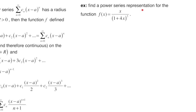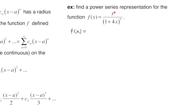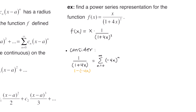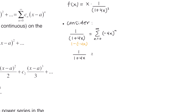This example says: find a power series representation for the function f of x equals x over the quantity 1 plus 4x squared. First I'm going to bring this x to the front. Because we have 1 over 1 plus 4x squared, I want to look at 1 over 1 plus 4x. If we think of it as 1 minus negative 4x, it's now in a form we can rewrite as a power series. Taking negative 4x to the n and expanding: plugging in 0 gives 1, plugging in 1 gives negative 4x, plugging in 2 gives positive 16x squared, and plugging in 3 gives negative 64x to the third.